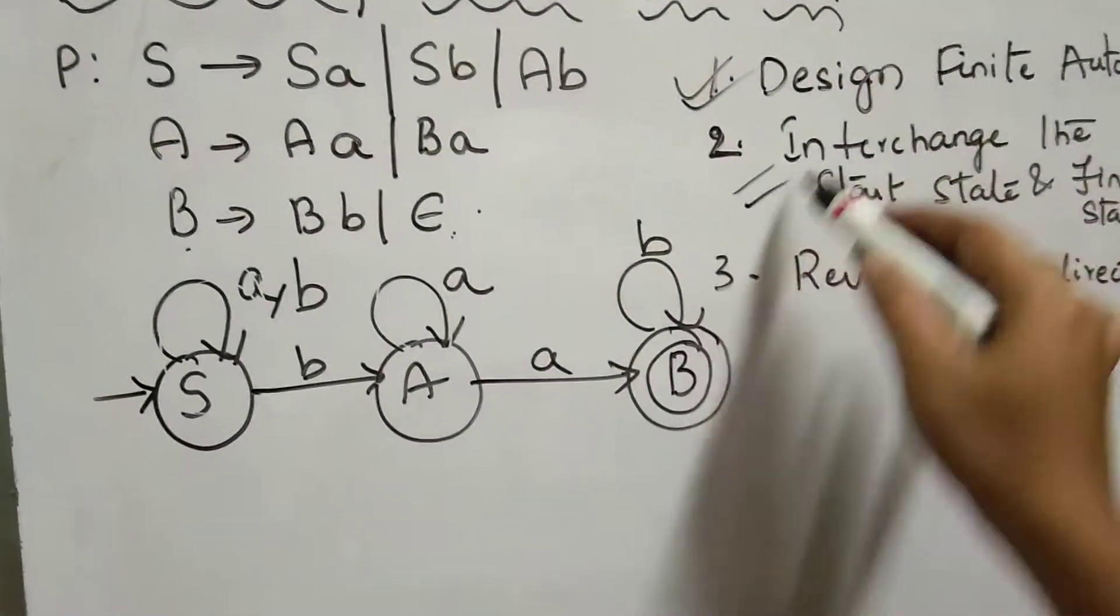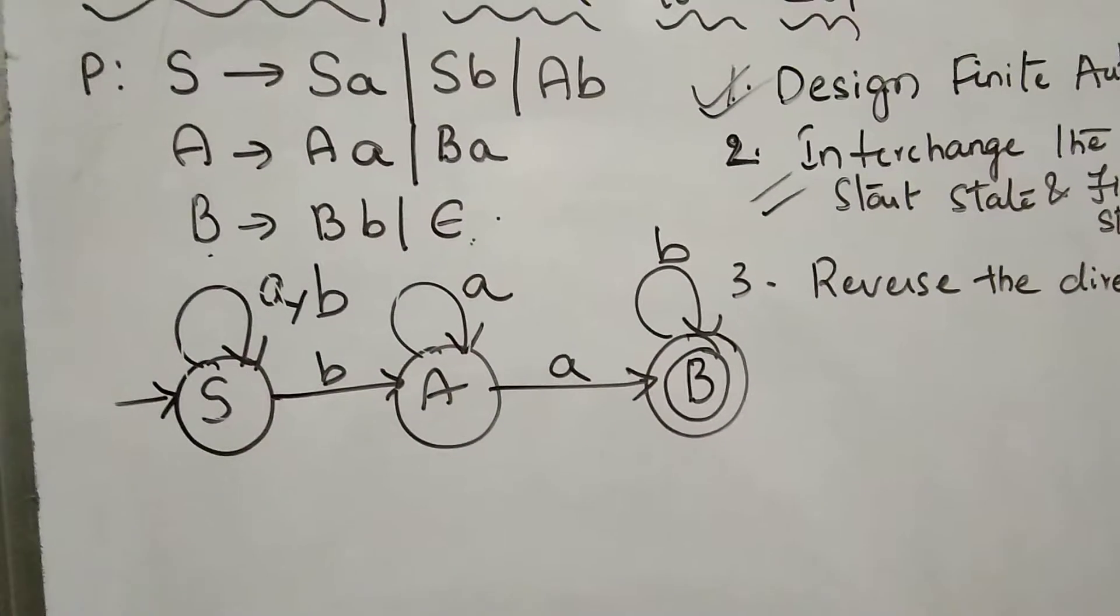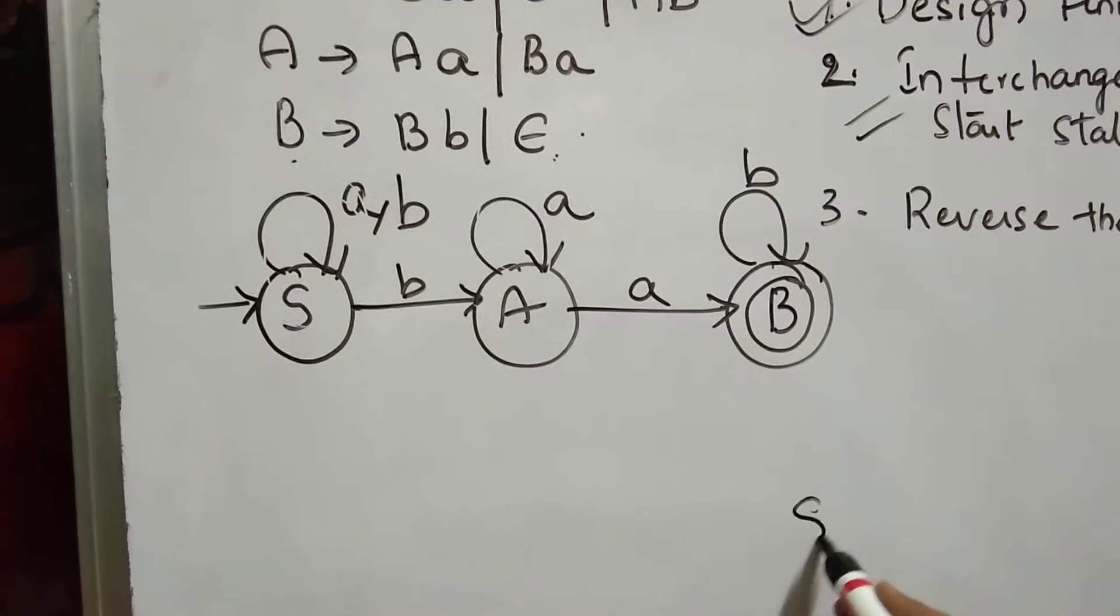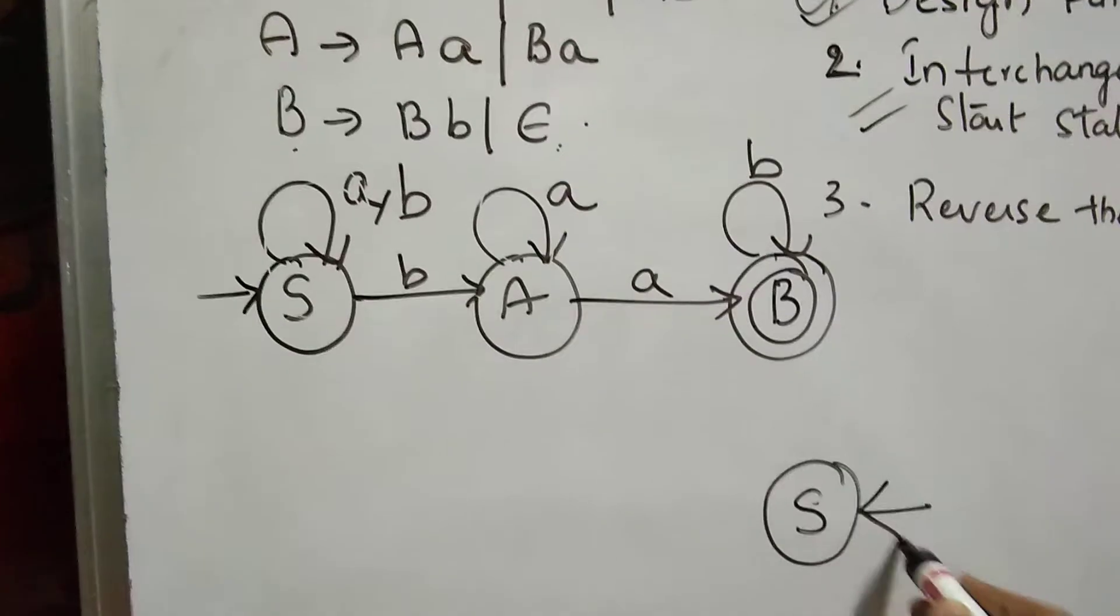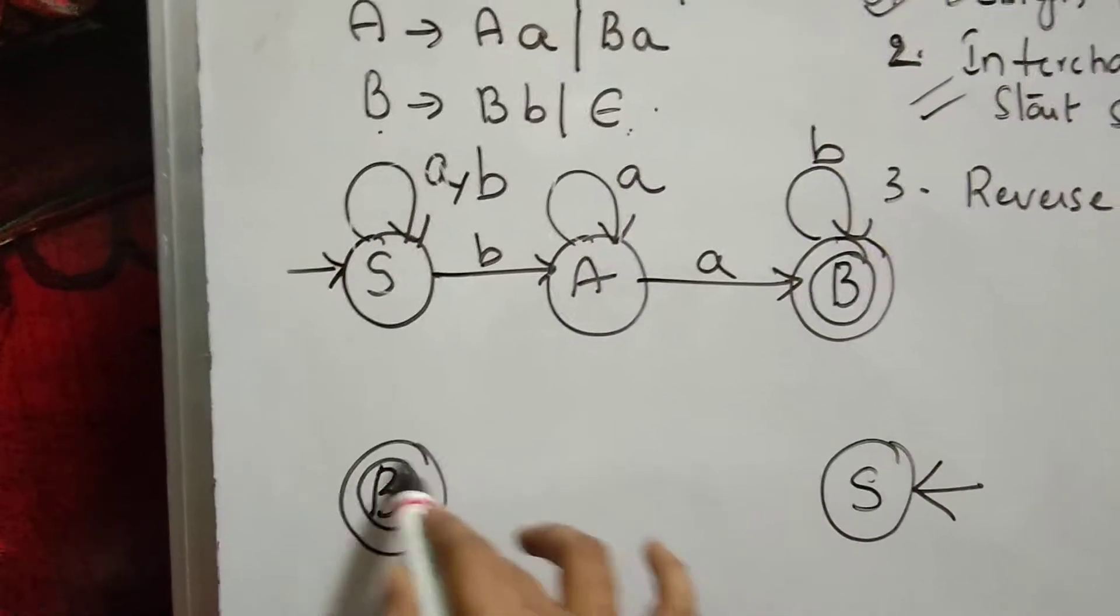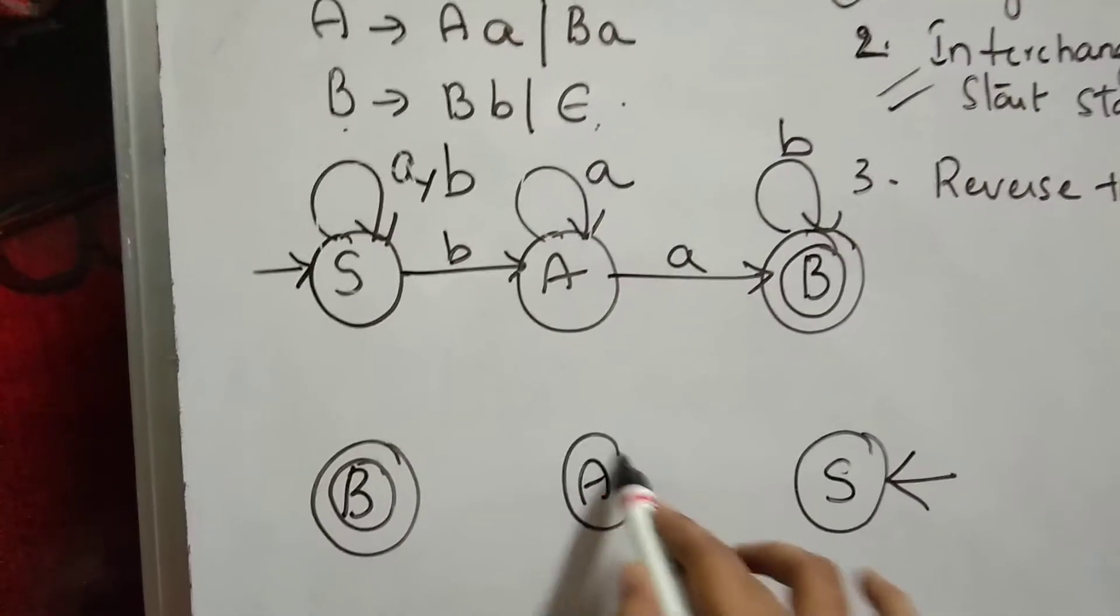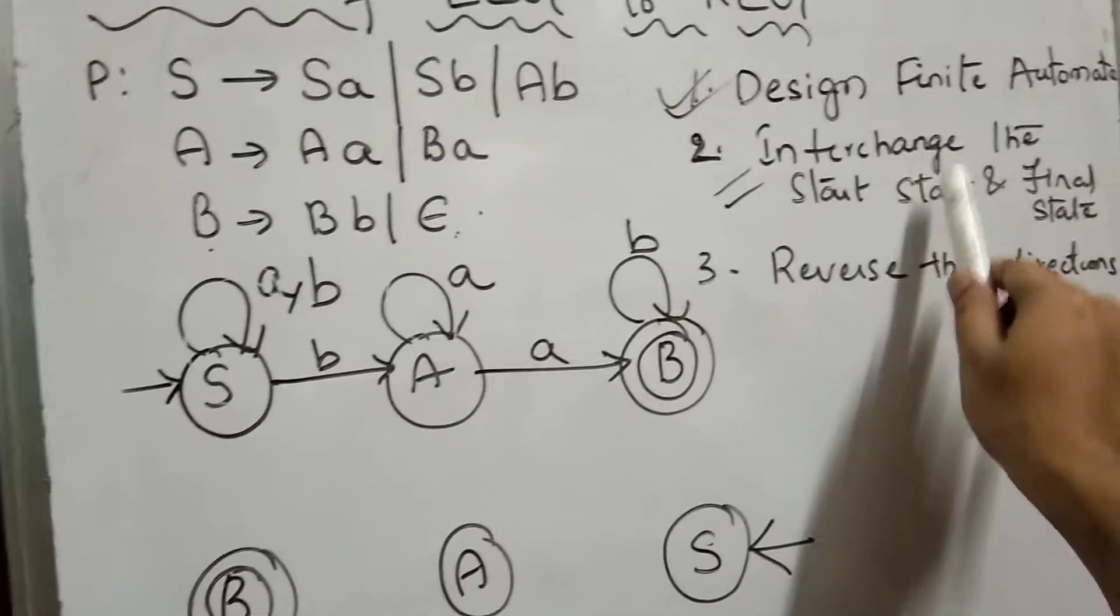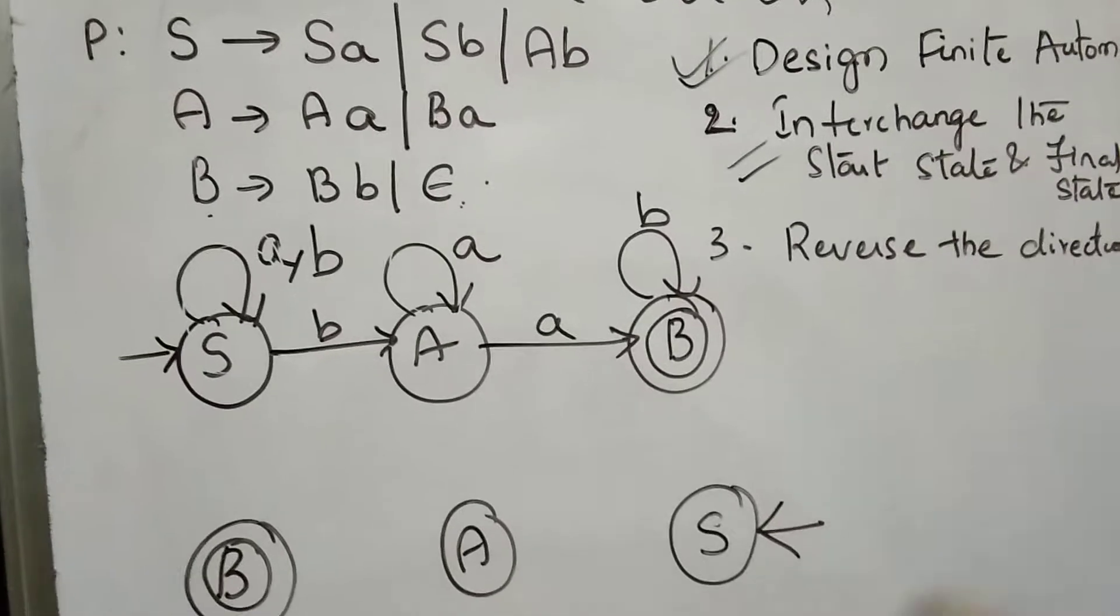Now the second step is to interchange the final state and starting state. S should come here, and B should be the final state here. Other states remain as usual.